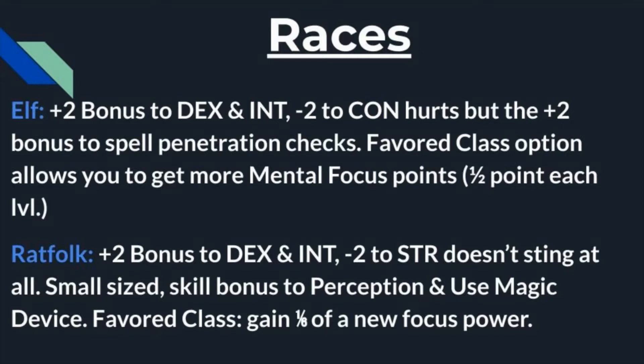Then we come to Ratfolk. They get the same bonuses as the Elf — plus two to intelligence and dexterity — but their penalty is a minus two to strength, which really doesn't hurt this build. They're small-sized, giving them bonuses to defense, reflex saves, Perception, and Use Magic Device. Use Magic Device is huge for Occultists — it's massively important. For the favored class bonus, they gain one-sixth of a new focus power, which isn't as good as mental focus points but still not bad.